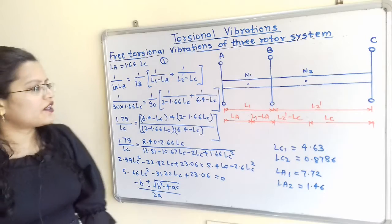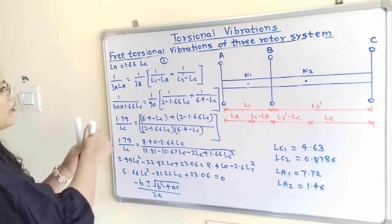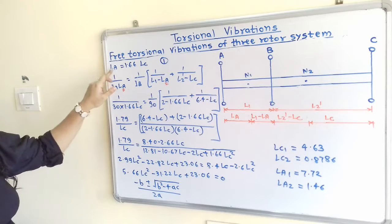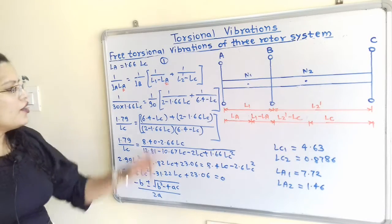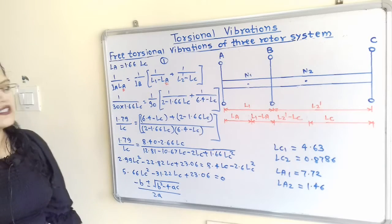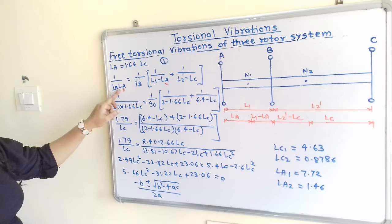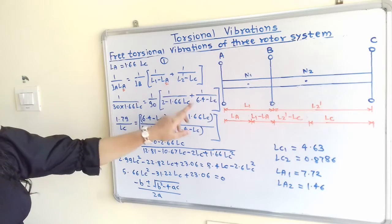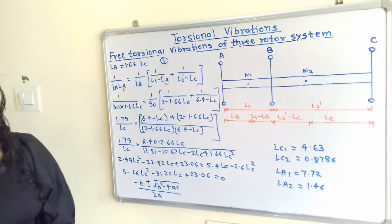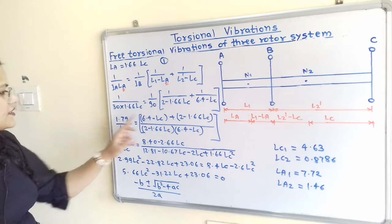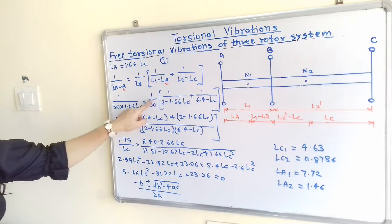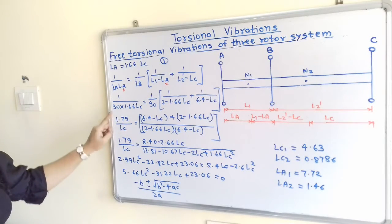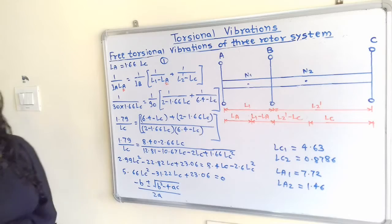Now we substitute values, replacing LA with 1.66 LC from equation 1. The values I_A = 30, I_B = 90, L1 = 2 meter, and L2 dash = 6.4072 are substituted. After taking 90 outside the bracket to the left-hand side, we get 1.17 / LC equal to the simplified bracket expression.